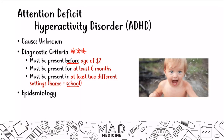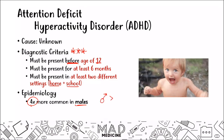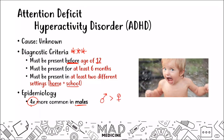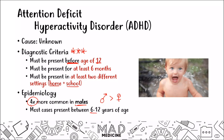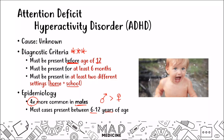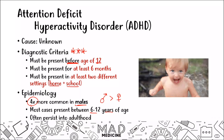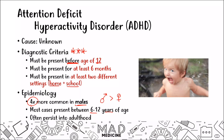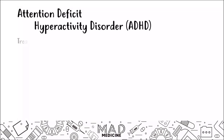Epidemiology-wise, ADHD is four times more common in males, and patients will mostly present around age six to twelve — that's the typical presentation range. ADHD will often persist, and there is no definitive cure because it does not go away. However, we do have certain types of treatments for ADHD.